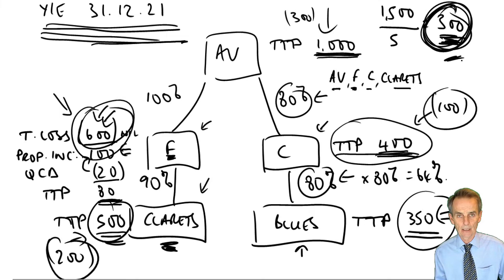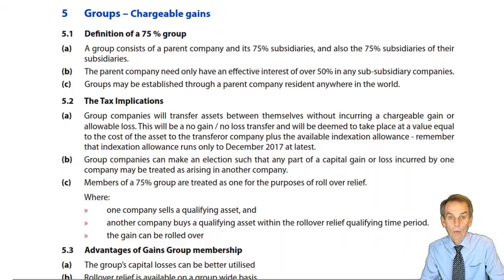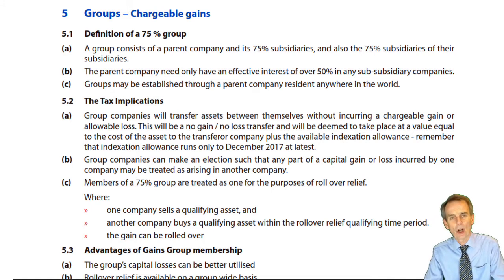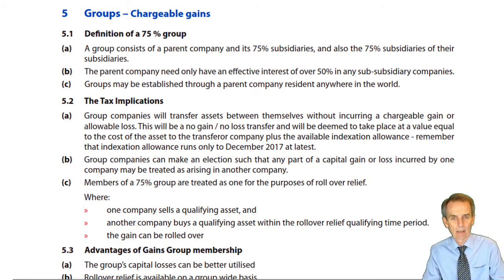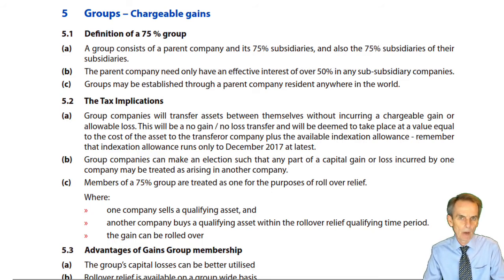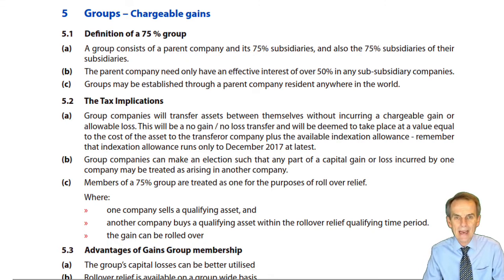Where we go to next — as I've said, dealing with what I hope you've prepared for — is the existence of the capital gains group and what that means for the group. At last we get to the final section within our chapter on groups. This deals with chargeable gains groups. What we'll find is it's a combination of the things we suggested at the very outset: a combination of both rules and then claims and elections that are available.